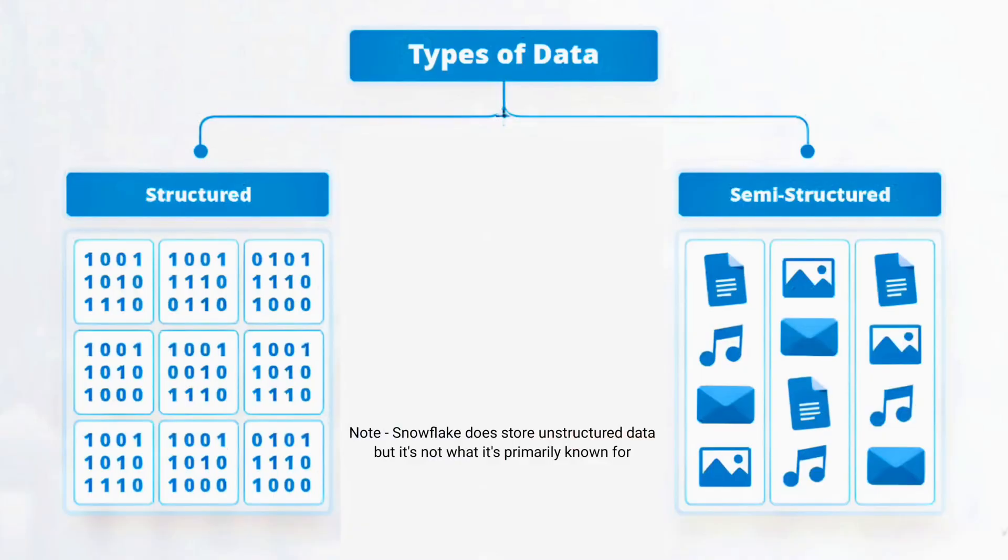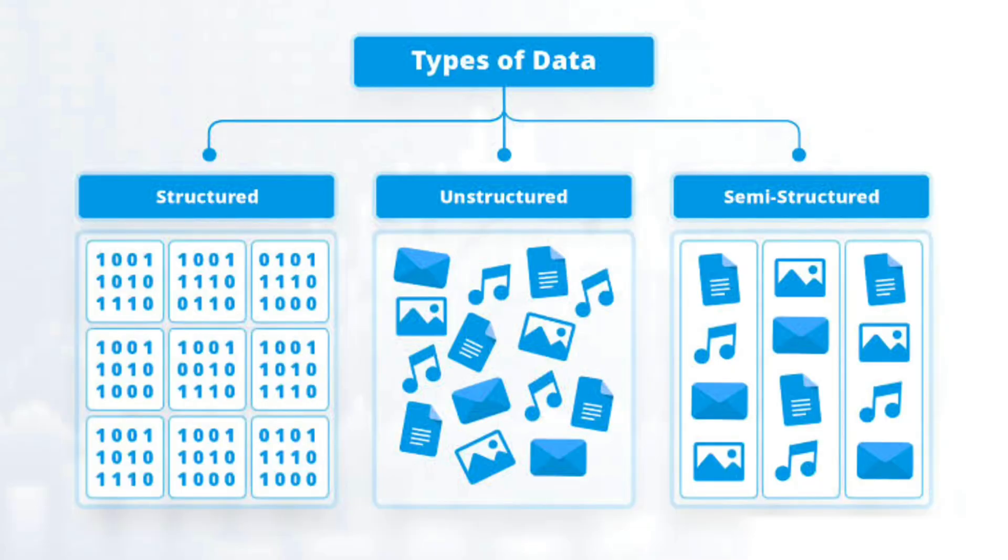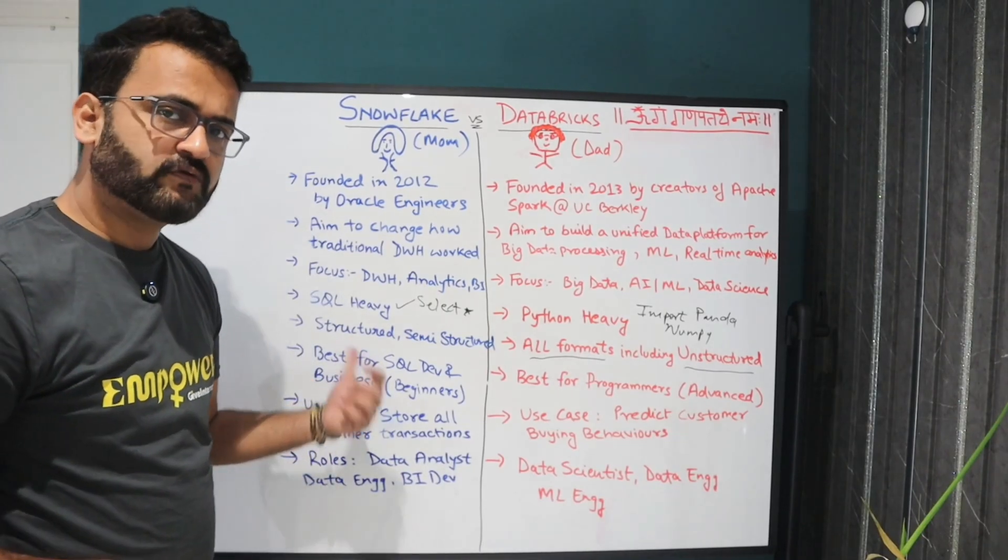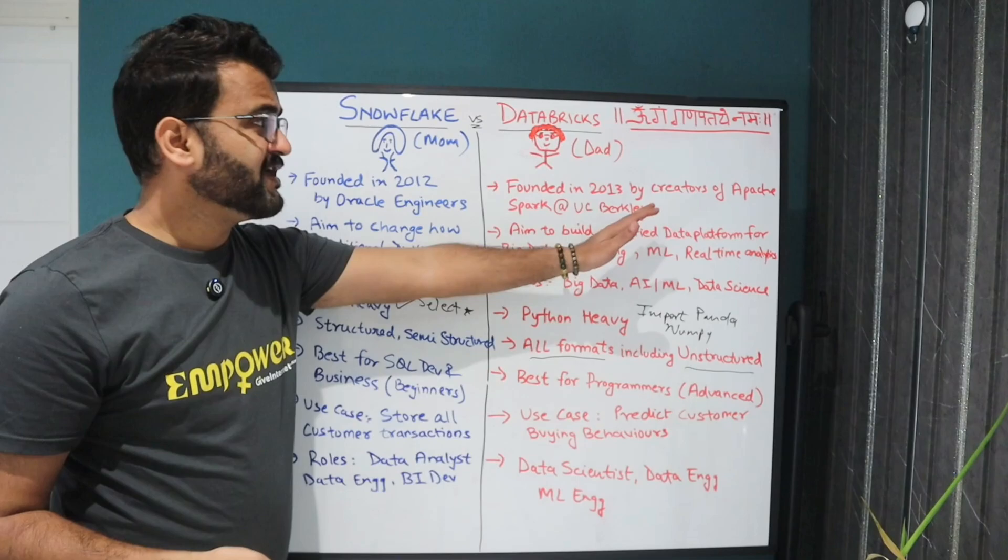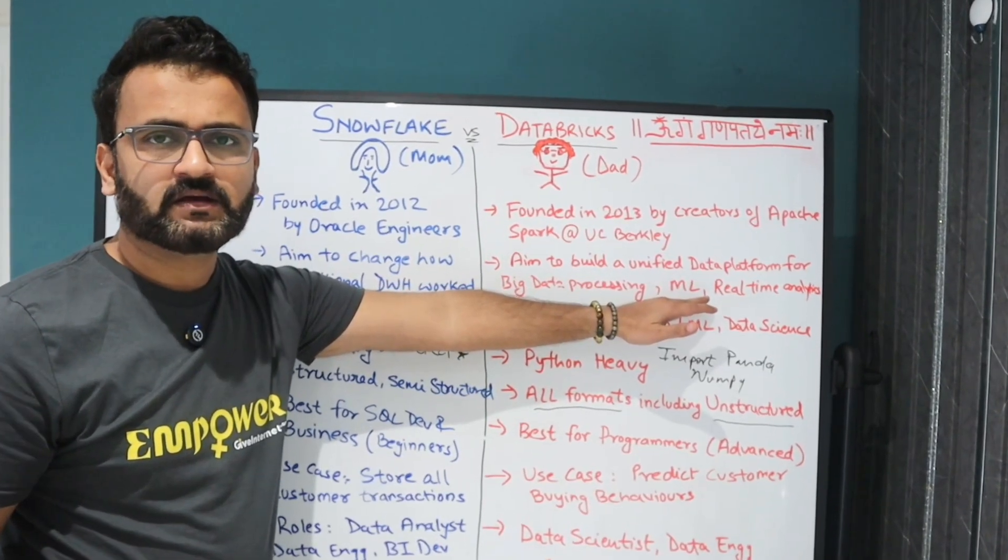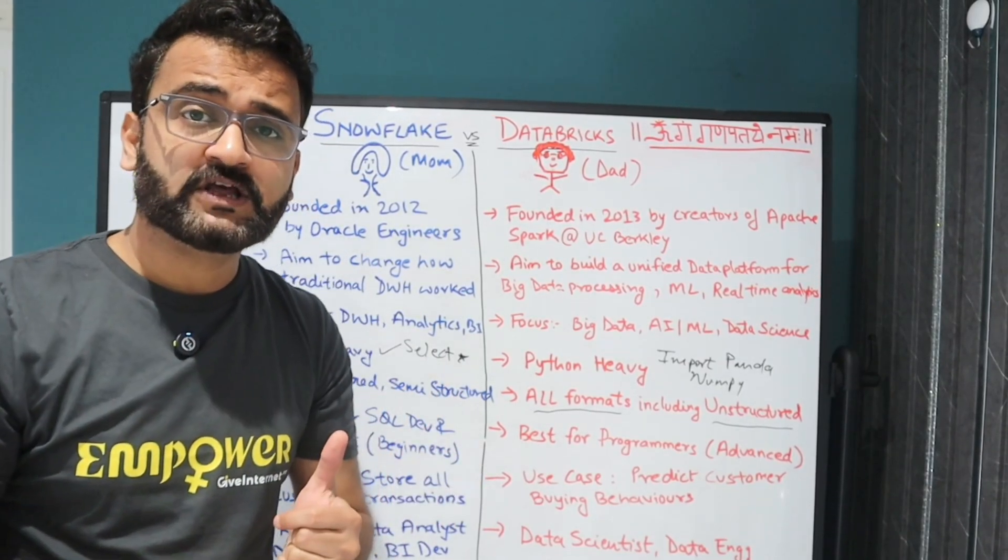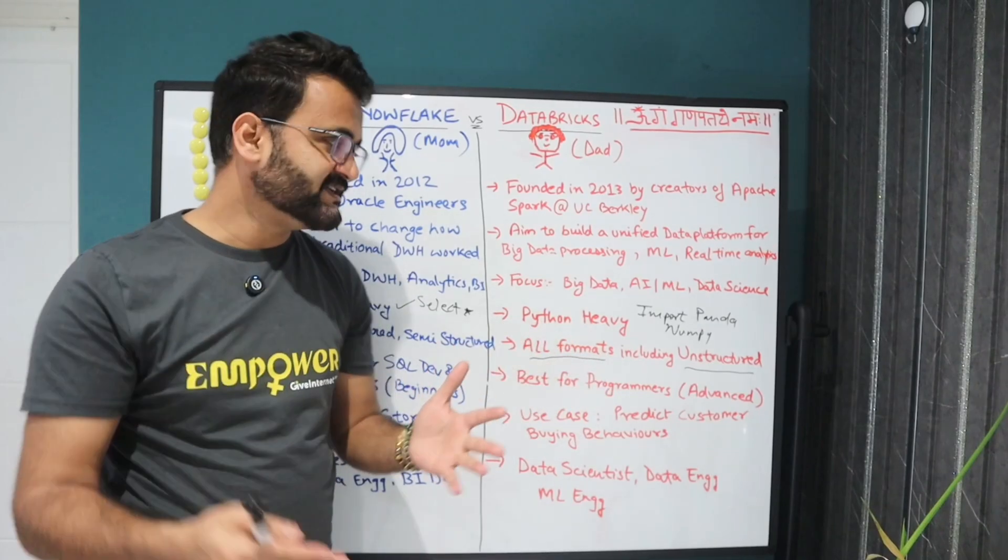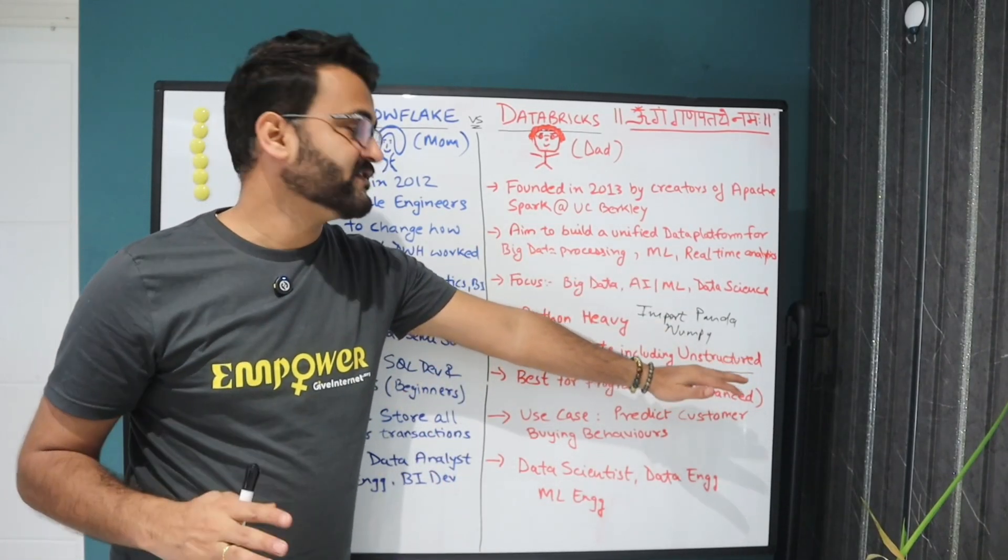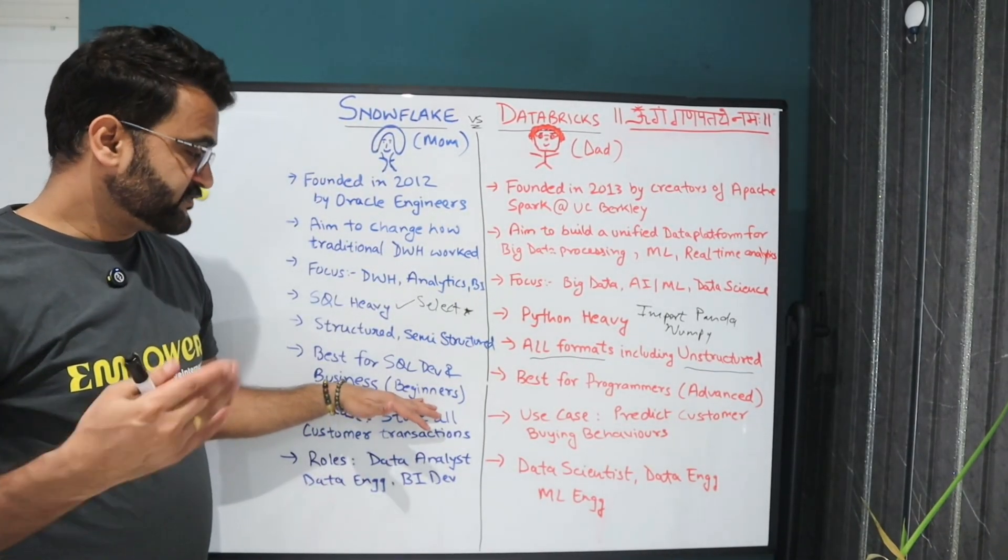The data format structured semi-structured. That's where Snowflake is very good. Here you have all data formats including unstructured. So you can store videos, you can store images. Now the counter question would be can we do it in Snowflake? Yes, but it is not very straightforward. The difference is here it comes naturally because when you build your ML models it could be based on anything. It could be based on sentiment analysis, your Twitter feeds, all the YouTube videos a person is watching for the last 24 hours. When it comes to machine learning, unstructured data is very important. That's why it is naturally built to process all kinds of data format from the use case perspective.